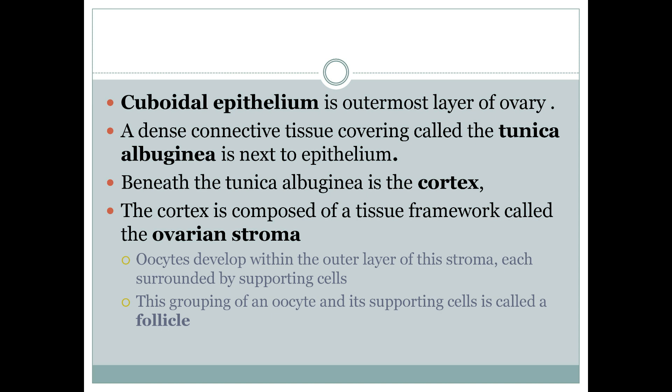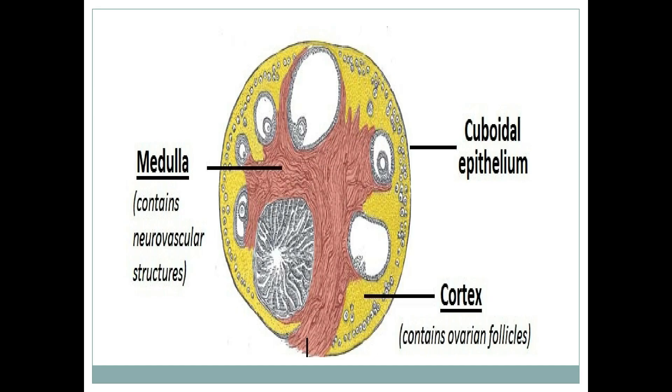In the ovarian stroma, oocytes develop into ova with the help of surrounding cells which support the oocyte maturation process. When we group oocytes and their surrounding cells together, it is termed an ovarian follicle. A diagram clearly depicts the anatomy of an ovary — you can see the cuboidal outer layer, then tunica albuginea beneath it.